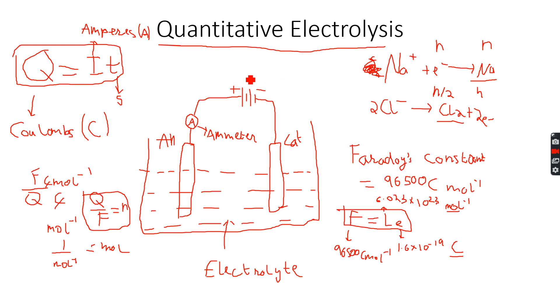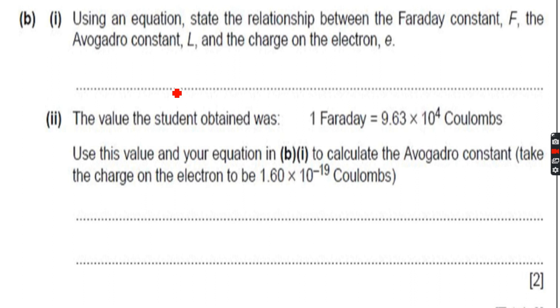Using an equation, state the relationship between the Faraday constant F, the Avogadro constant L, and the charge on the electron e. So we know that F equals L·e. The value the student obtained was 1 Faraday equals 9.63 times 10 to the power of 4 coulombs.